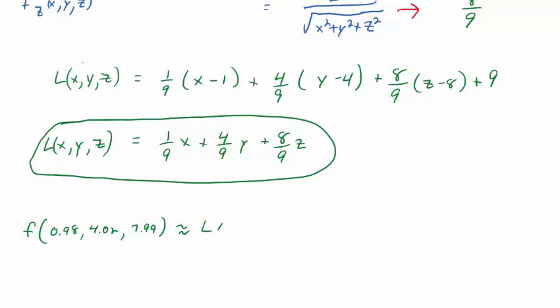And so what's going to estimate that is the linearization we just found. So that would be L of those values, 0.98, 4.02, and 7.99. And basically, you're going to fill those values in the tangent plane equation. And you should get something around 8.997, and I think the 7 is repeated. So that should be a good approximation of the function at those values of x, y, and z. Why is it a good value? Simply because the input values are near 1, 4, and 8. That's it. It's really easy. What do you think?